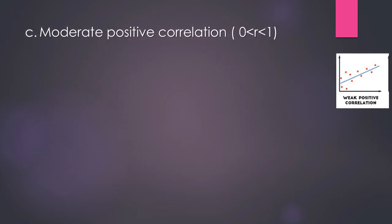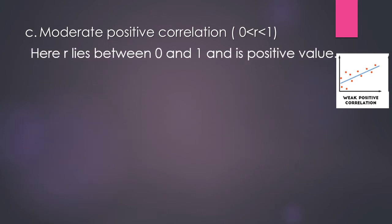The next type is moderate positive correlation, where r lies between zero and plus one with a positive value. One example is the correlation between pneumonia and overcrowding of people — as overcrowding increases, the chances of pneumonia also increase, gradually.